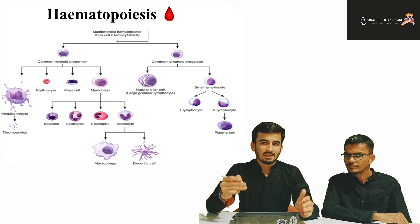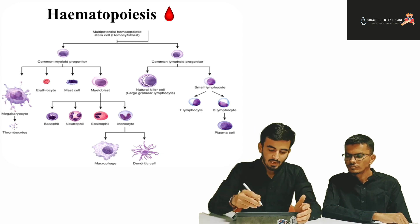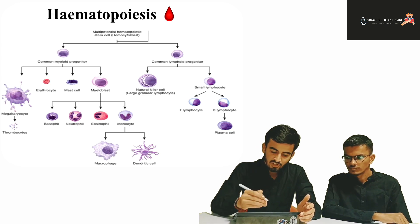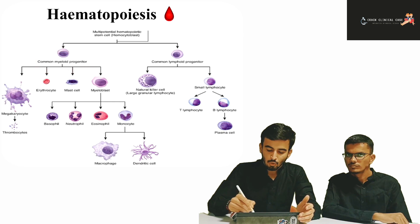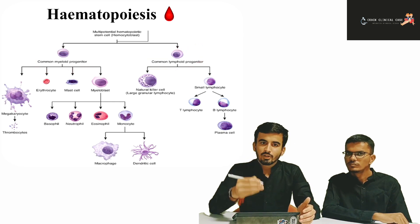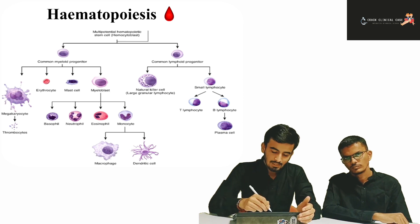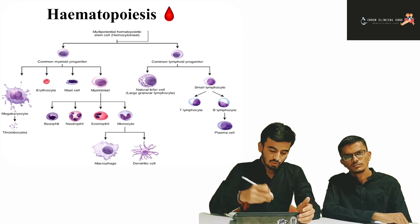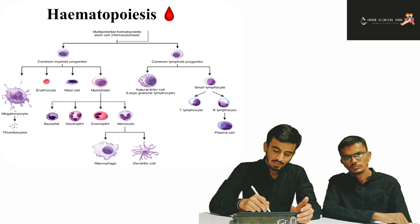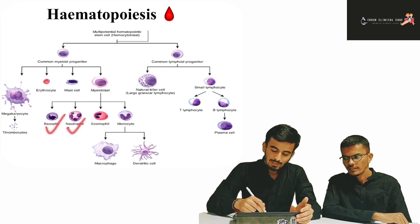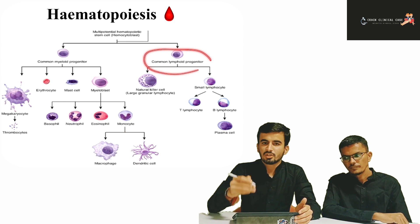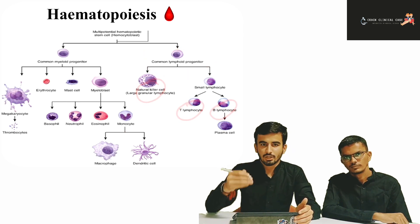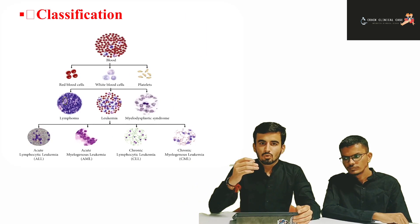Hematopoiesis is the process by which different blood cells are formed. Pluripotent cells from the bone marrow divide and differentiate into common myeloid progenitor cells and common lymphoid progenitor cells. These mature into erythroblasts, mast cells, myeloblasts, and megakaryocytes — which become thrombocytes (platelets). Myeloblasts mature into basophils, neutrophils, eosinophils, and monocytes. Lymphoid progenitors mature into NK cells, B cells, T cells, and plasma cells.